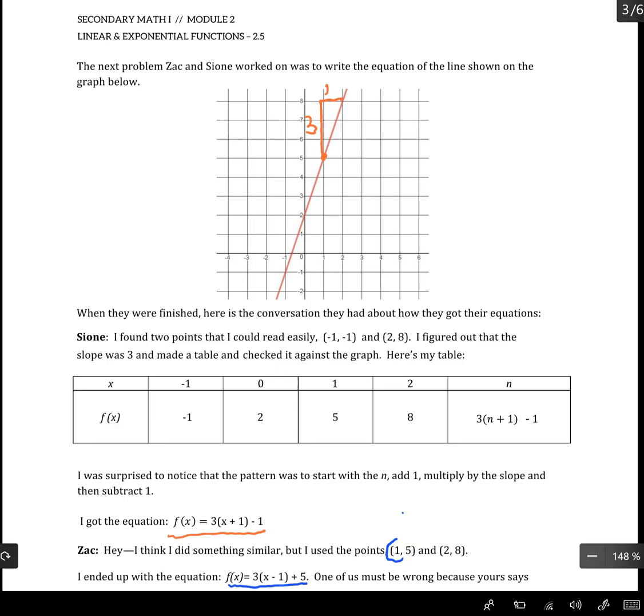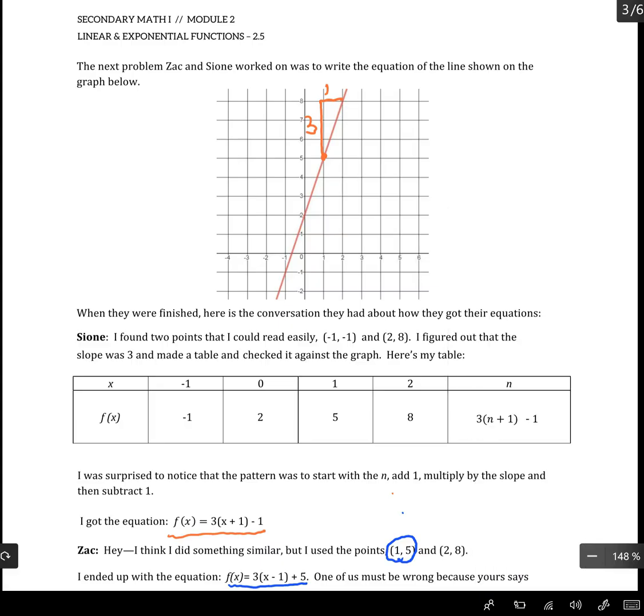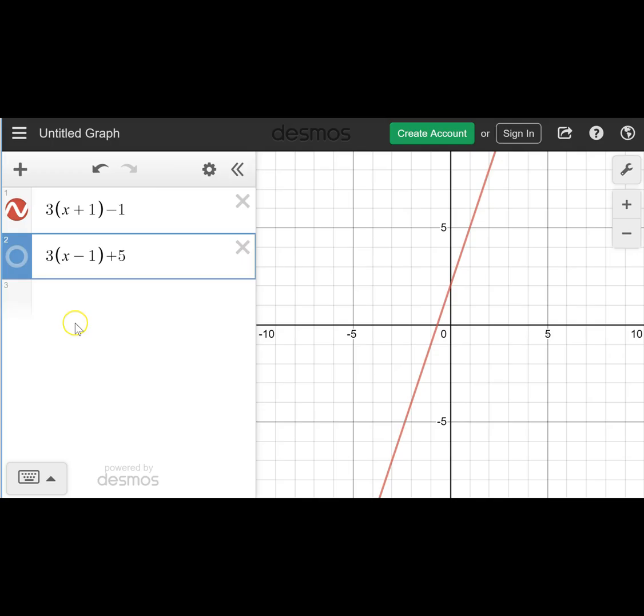So Sion had this equation and then Zac had this equation. And they both have the 3 in their equation. So what Zac says is, okay, I was basing mine off of the slope and this point (1, 5). Where Sion was basing hers off of the slope and this point negative 1, negative 1.